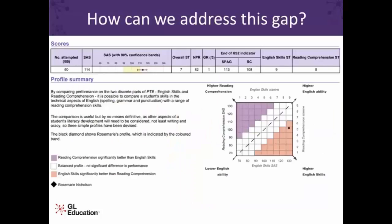Here is an example of a Progress Test individual report. The scores work exactly the same as CAT4 — 100 is average. This student has an SAS of 114, meaning she's performing above average overall. But the reports go into significant detail about particular areas she may need to focus on. Just focusing on English: on the right-hand side of the table you can see a discrepancy between her English skills — spelling, punctuation and grammar — and her comprehension. This gives really powerful information to her next teacher, making it quite clear that comprehension is something she will need to focus on to improve her attainment, while making sure her spelling, punctuation and grammar skills are also utilised.